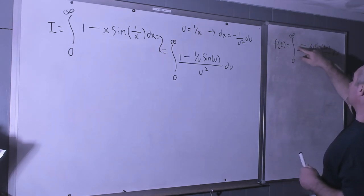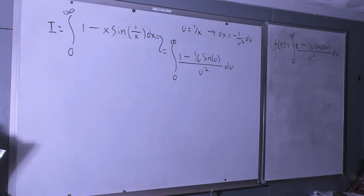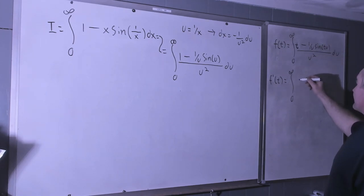0 minus 1 over u sine t u over u squared du from 0 to infinity. Partial derivative with respect to t of our integrand, so that's plus 1 minus cosine t u over u squared.